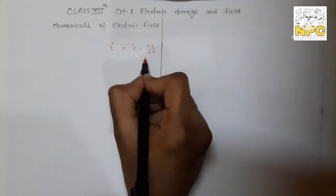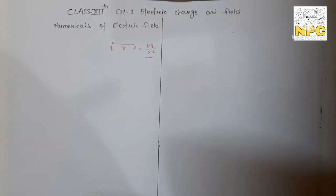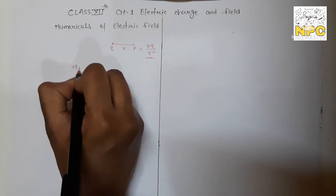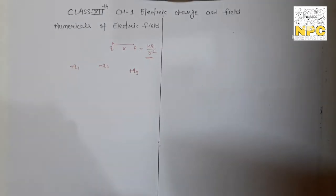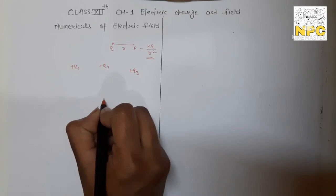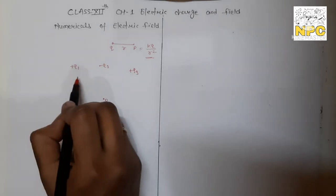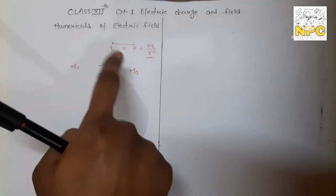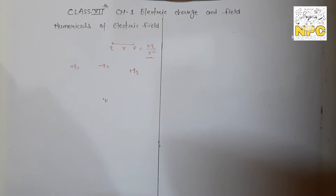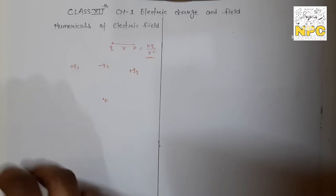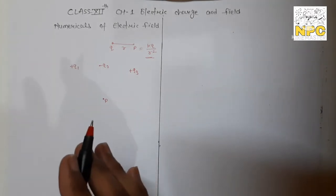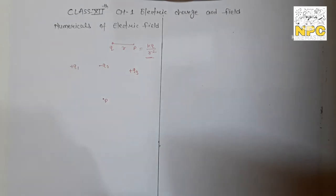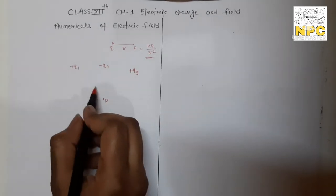If you have more than one charge — say positive Q1, negative Q2, and positive Q3 — and you have to find the electric field at point P due to all three, then you use the superposition principle. According to the superposition principle, the net electric field at point P is the vector sum of all the individual electric fields. The field due to Q1 at point P — let's call it E1.